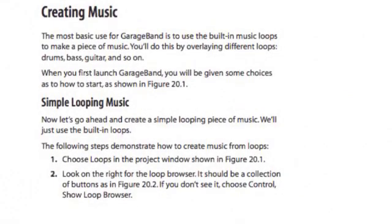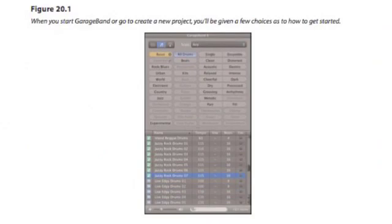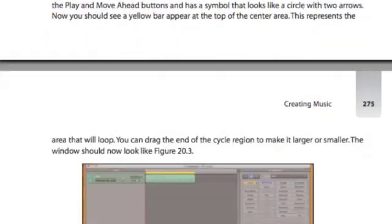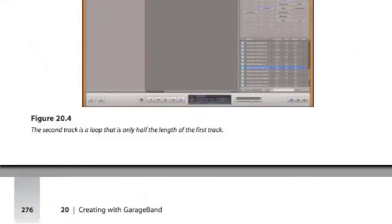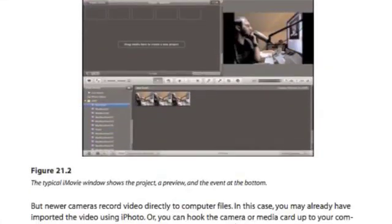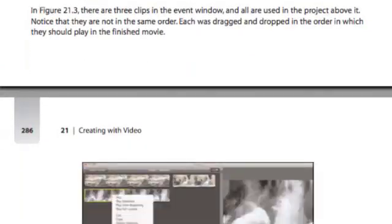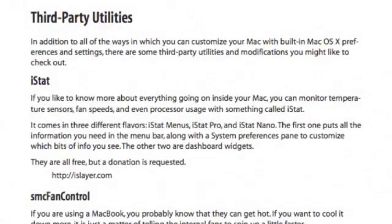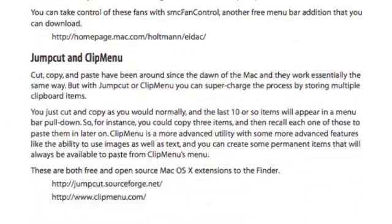In the chapter on creating music I look at GarageBand and show you an example of how to create a simple musical composition using the loops that come with GarageBand. In the chapter on iMovie I talk about importing video, editing it, and producing your video. In Chapter 22 I talk about customizing your Mac, including adding third-party utilities that you can get to make your Mac even better.